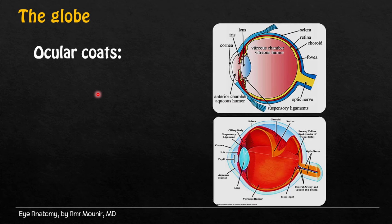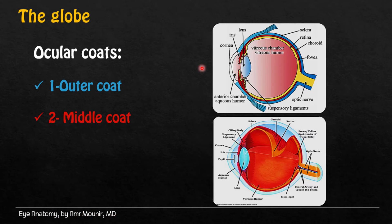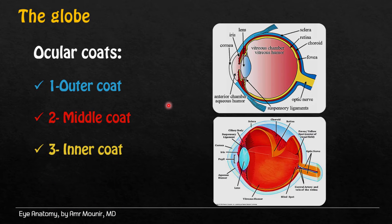The globe is formed of coats, called ocular coats. The outer coat is the outer surface of the globe, formed of the sclera and the cordial. The middle coat is the vascular layer of the eye, formed of the iris, ciliary body, and the choroid. The inner coat is the neural layer of the globe.